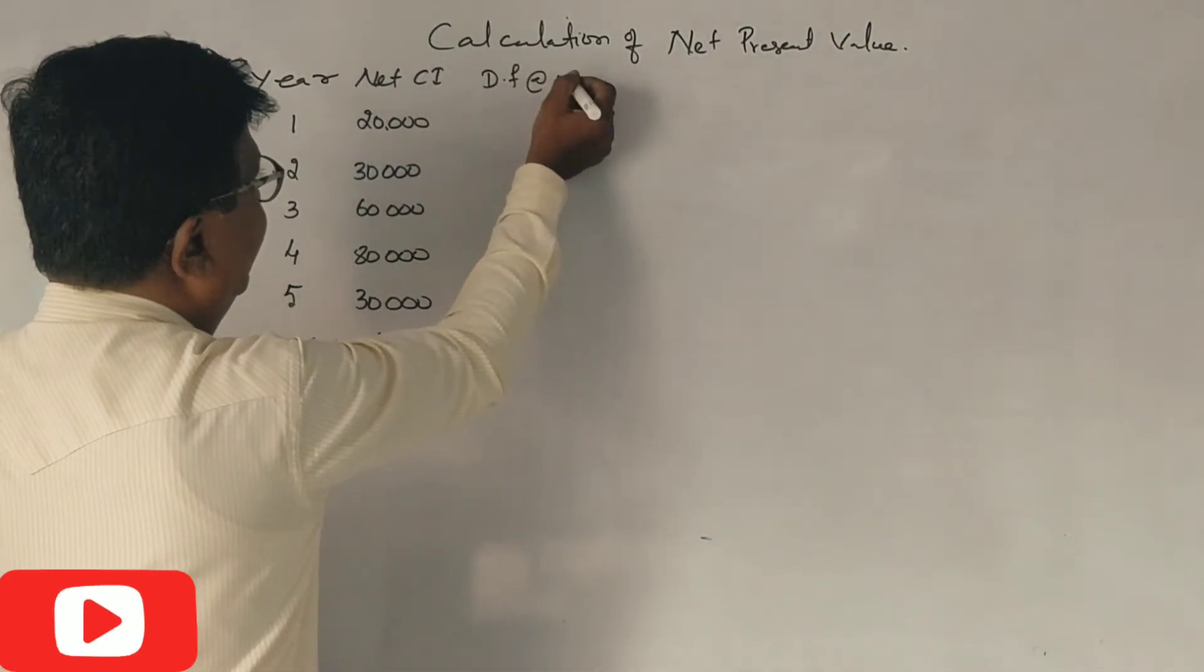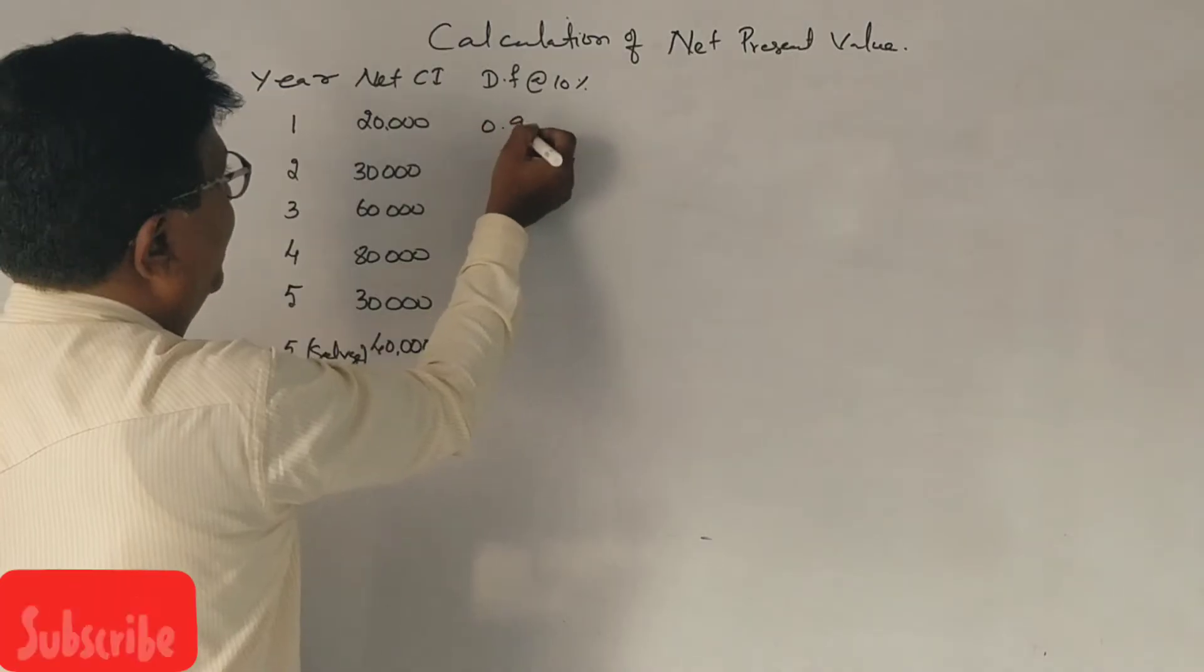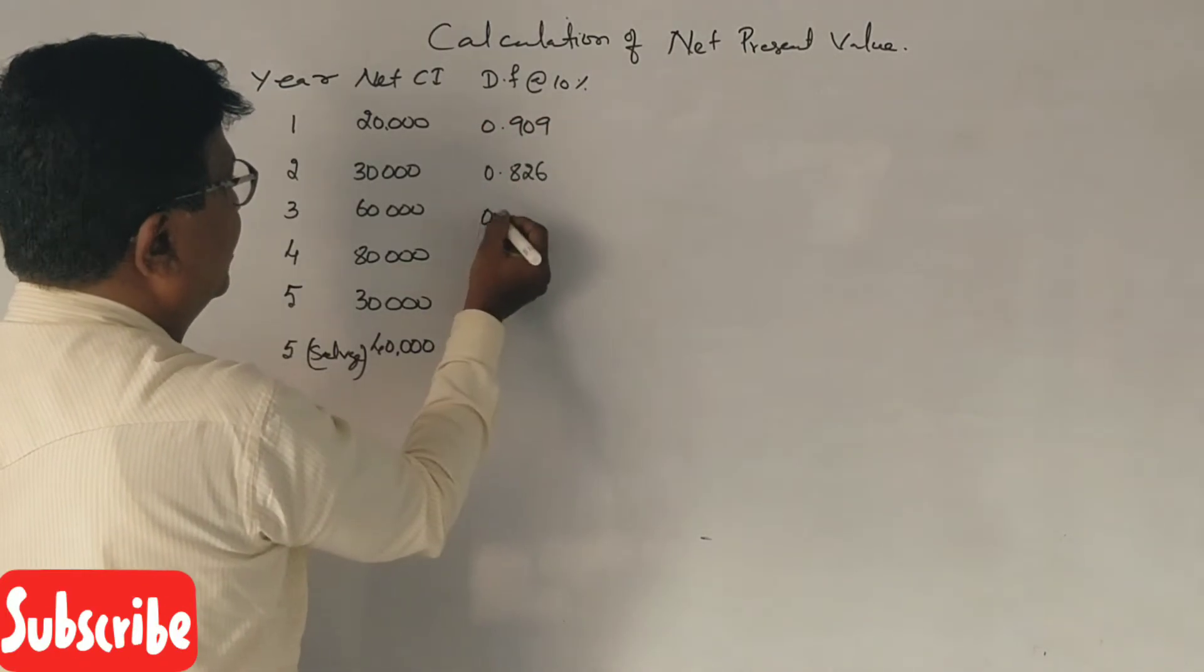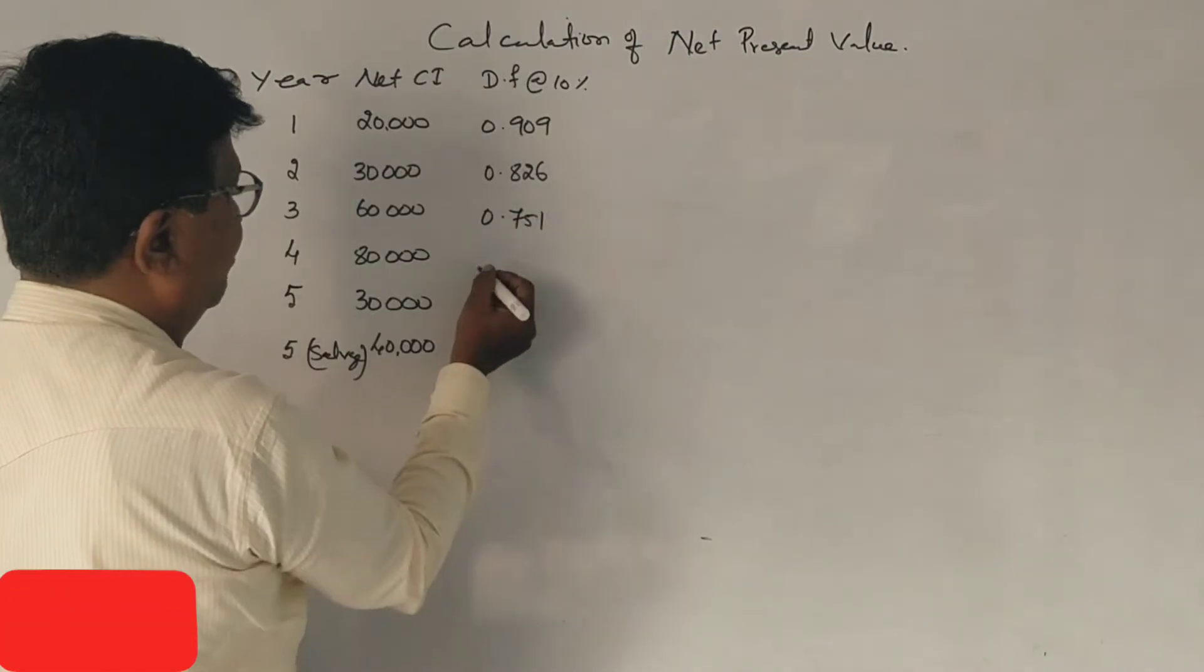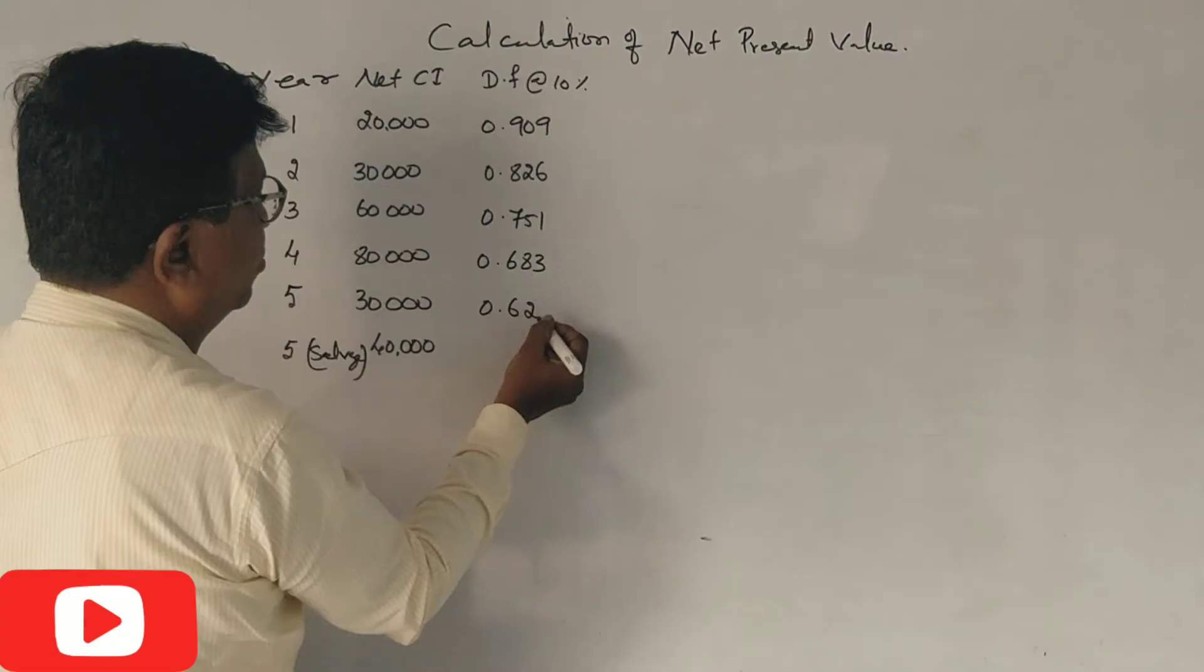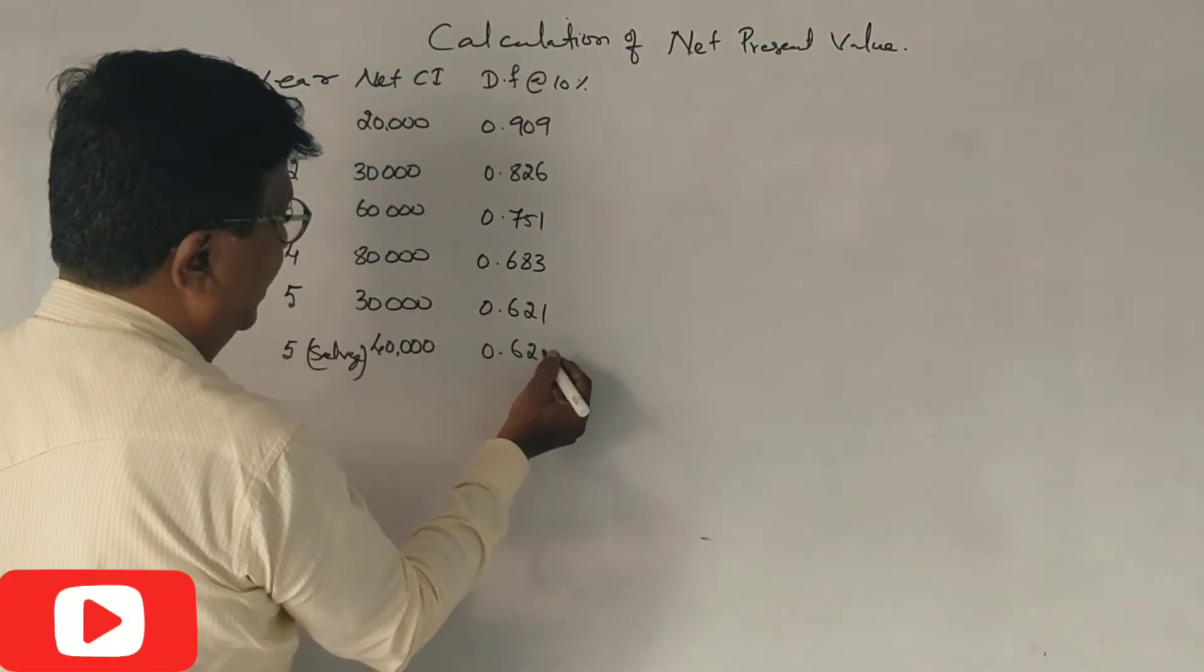0.909, 0.826, 0.751, 0.683, 0.621. Correct?